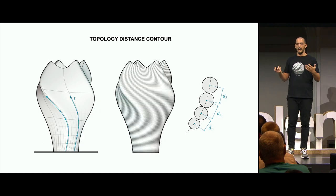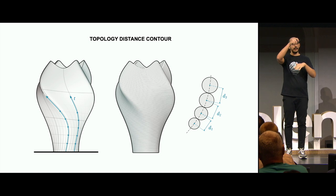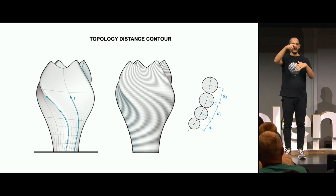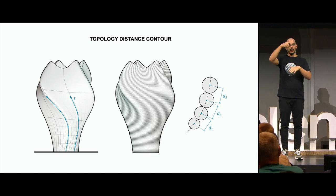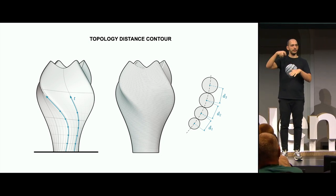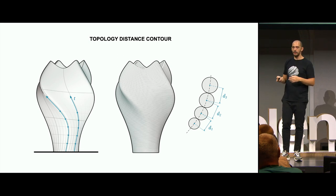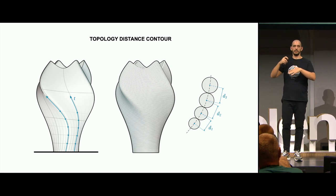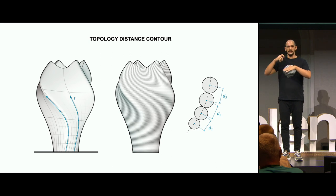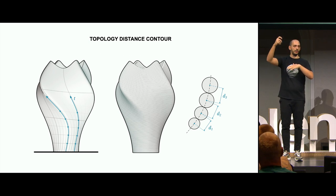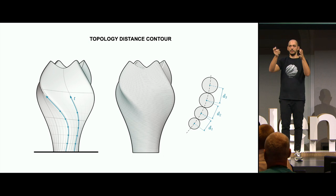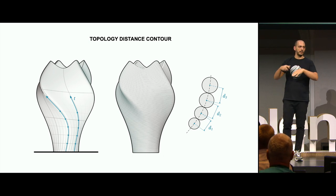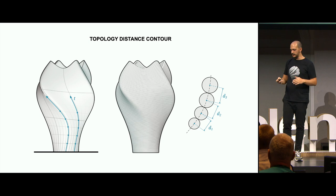If you want your printing path to be a continuous closed polyline or curve, you can use topology distance instead — basically a distance counting the number of segments in your geometry. With a very nice, regular topology, this creates curves that start from the bottom and end at the top.